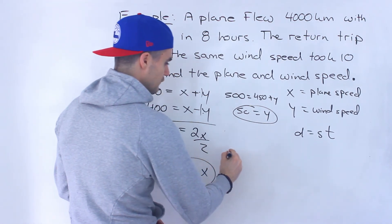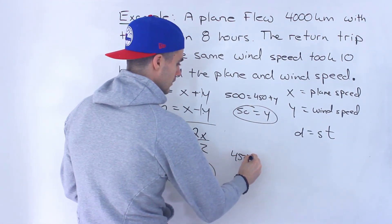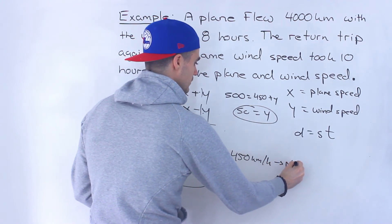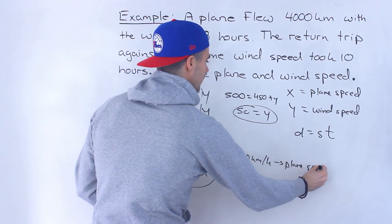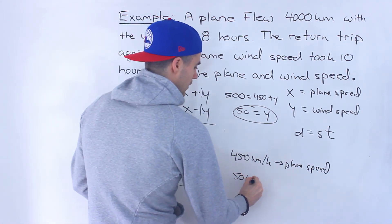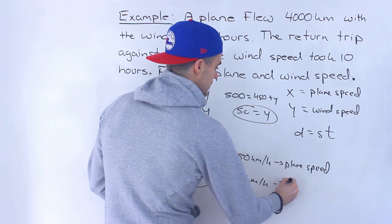So 450 kilometers per hour is the plane speed. And then 50 kilometers per hour is the wind speed.